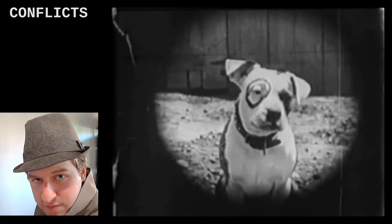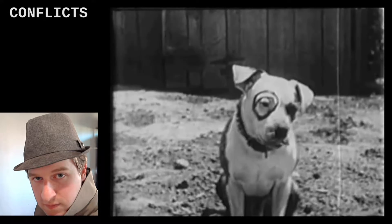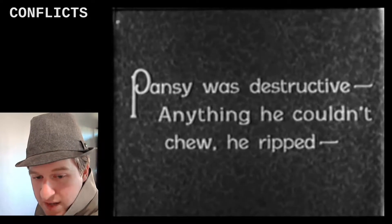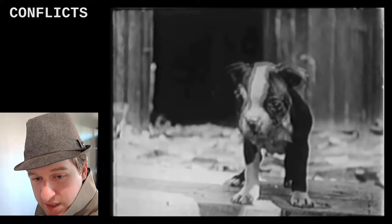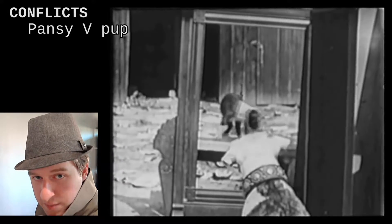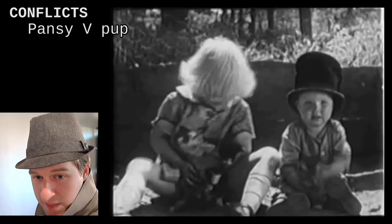Here's how this is demonstrated in Our Gang, which is the precursor to Little Rascals and has pretty much the same feel and structure. So first we see a dog, and then we get some info: Pansy was destructive — anything he couldn't chew, he ripped. We already see that something is incoming. But the conflict doesn't happen until we see this little pupper, and then we get Pansy v. Pup.